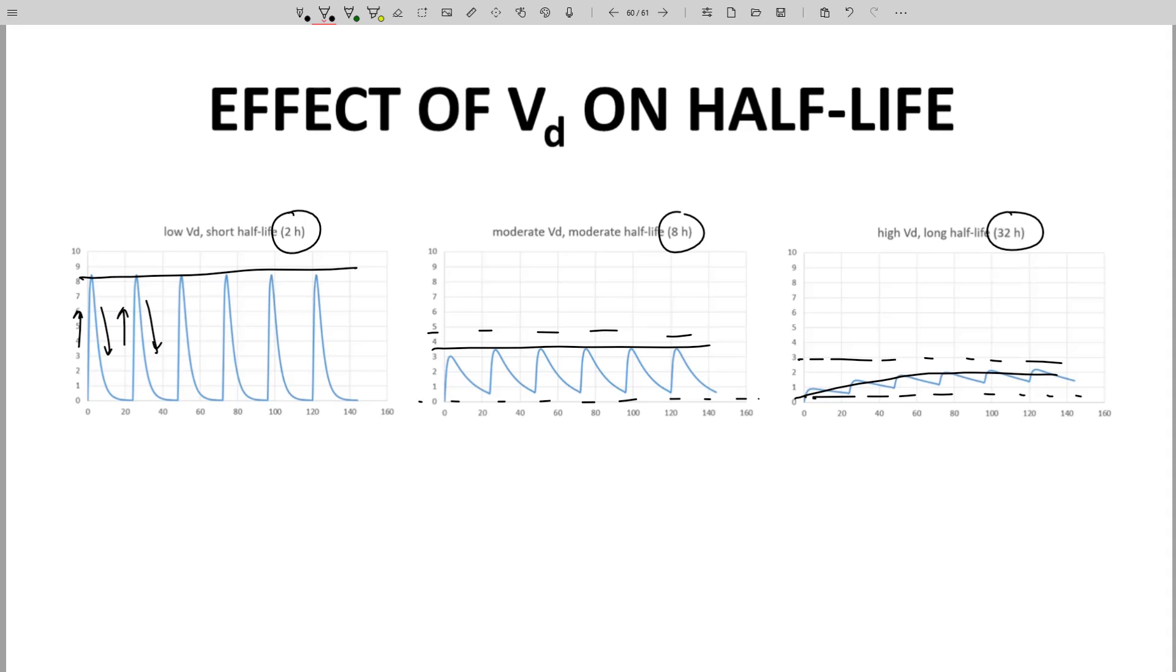In practice, however, most once-per-day oral drugs have a half-life in the range of 4 to 16 hours. This half-life range balances a narrow CP range and rapid onset of effects.